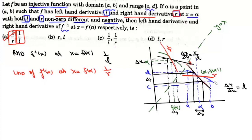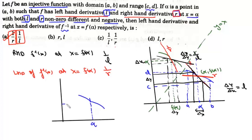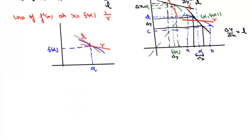All this is difficult to visualize in a graph, so now we'll solve this question analytically. We are given this one-one function f, and at alpha it is not differentiable. This point is f(alpha). The left hand derivative at alpha is l and the right hand derivative at alpha is r. Since the function is clearly decreasing, we know that f(alpha minus h) is greater than f(alpha), which is greater than f(alpha plus h).